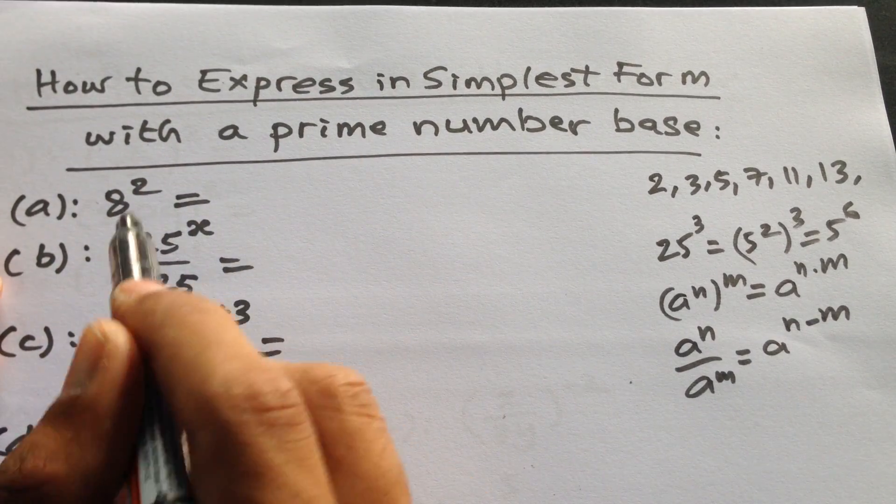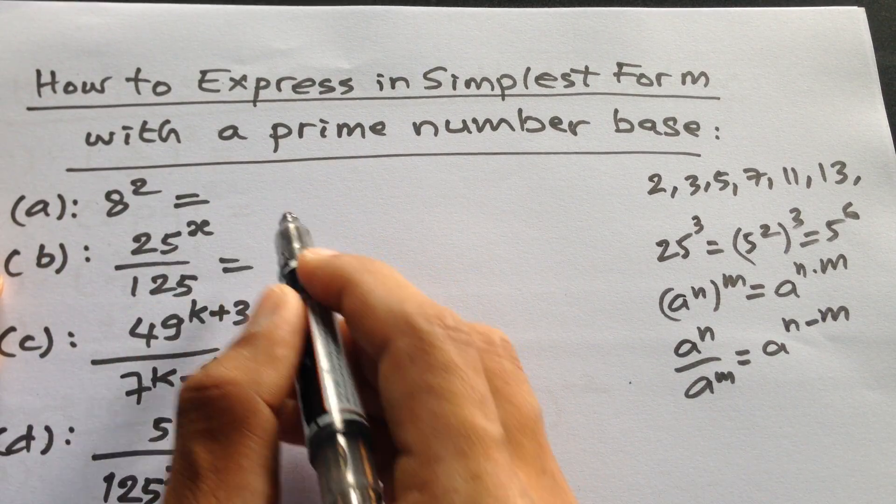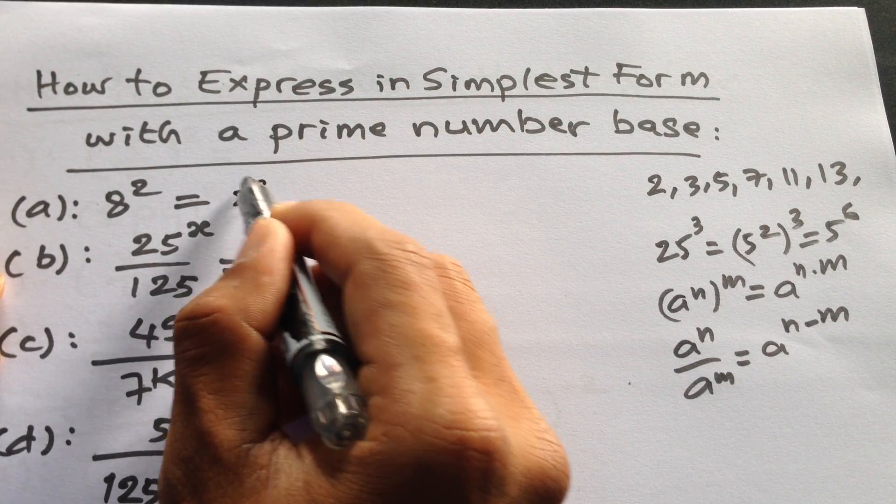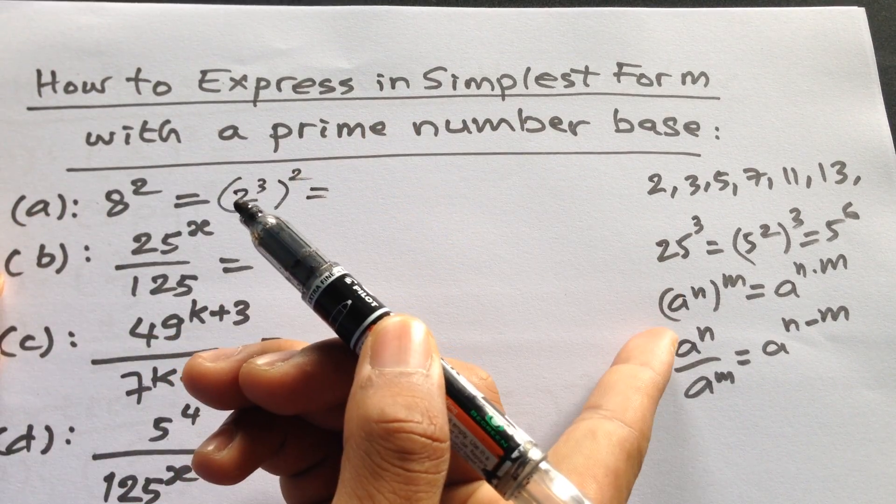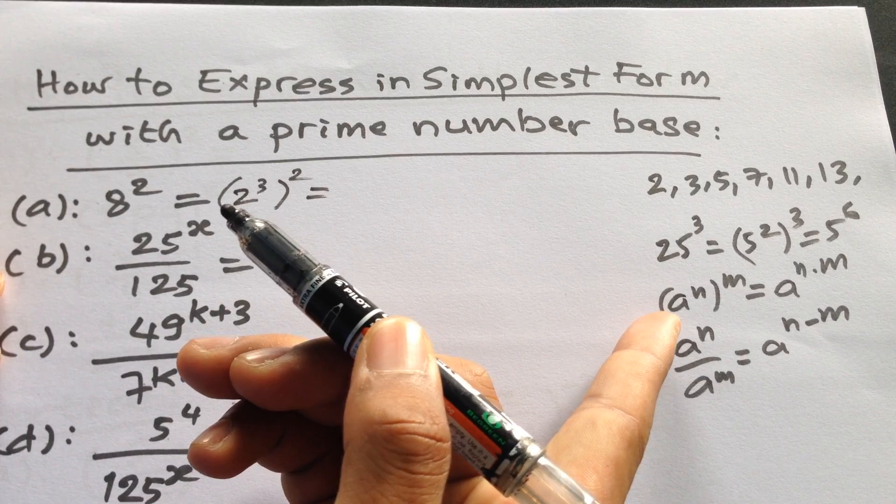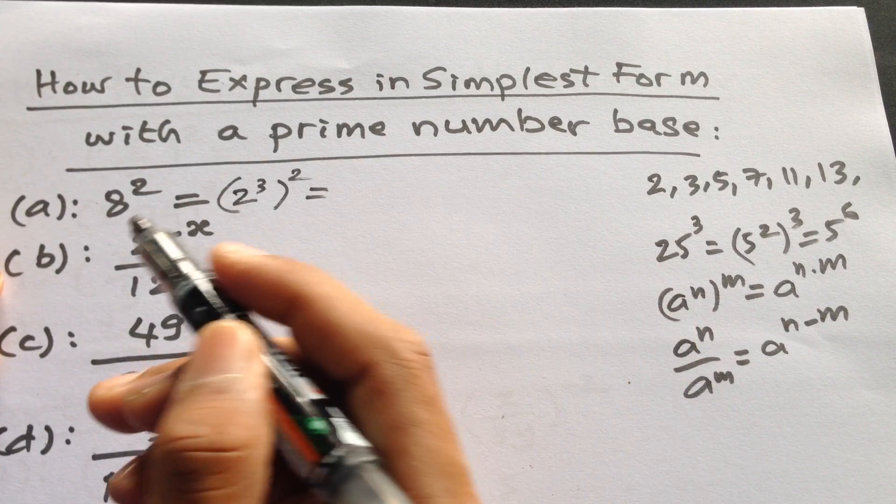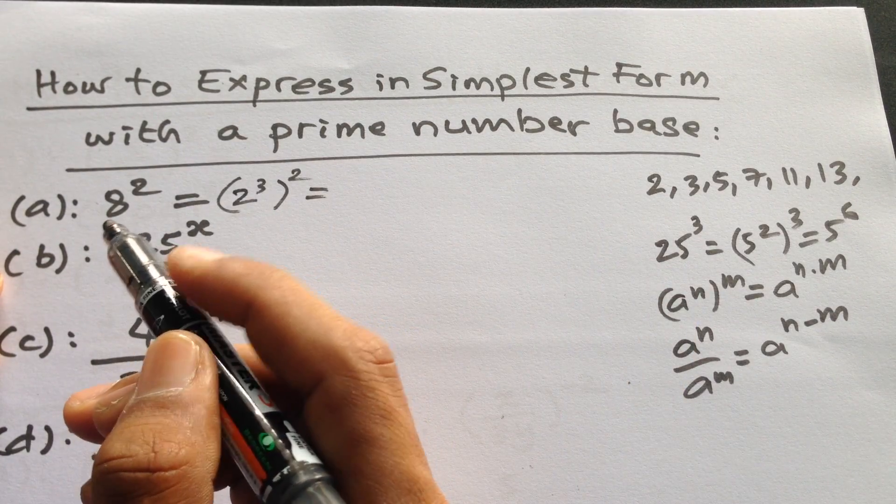For problem (a), 8 to the power 2, we have 2 cubed to the power 2, and we use the formula a to the power m to the power n equals a to the power m times n.